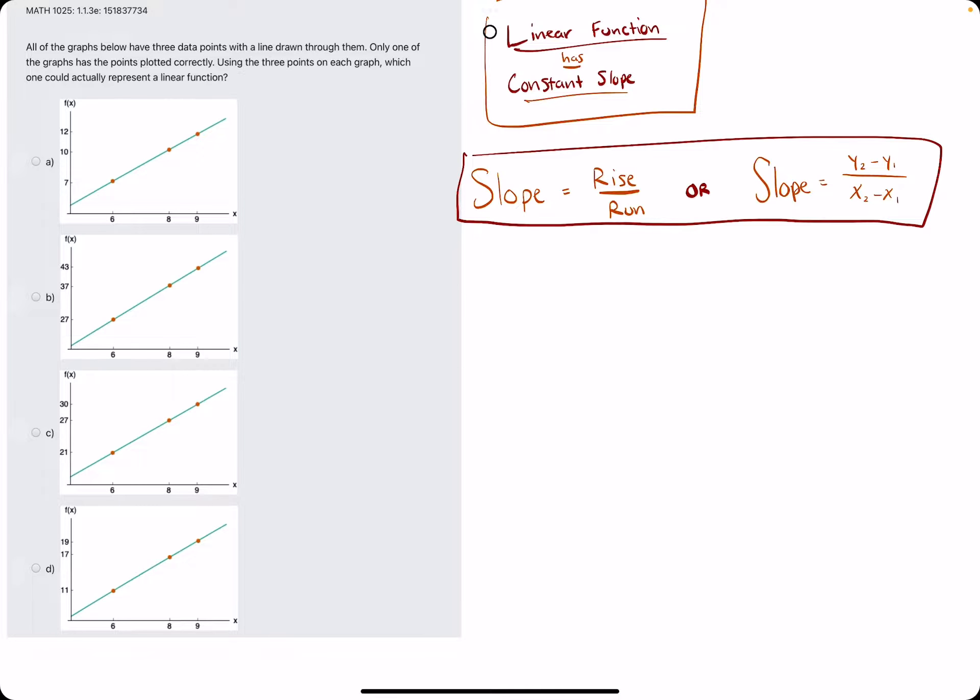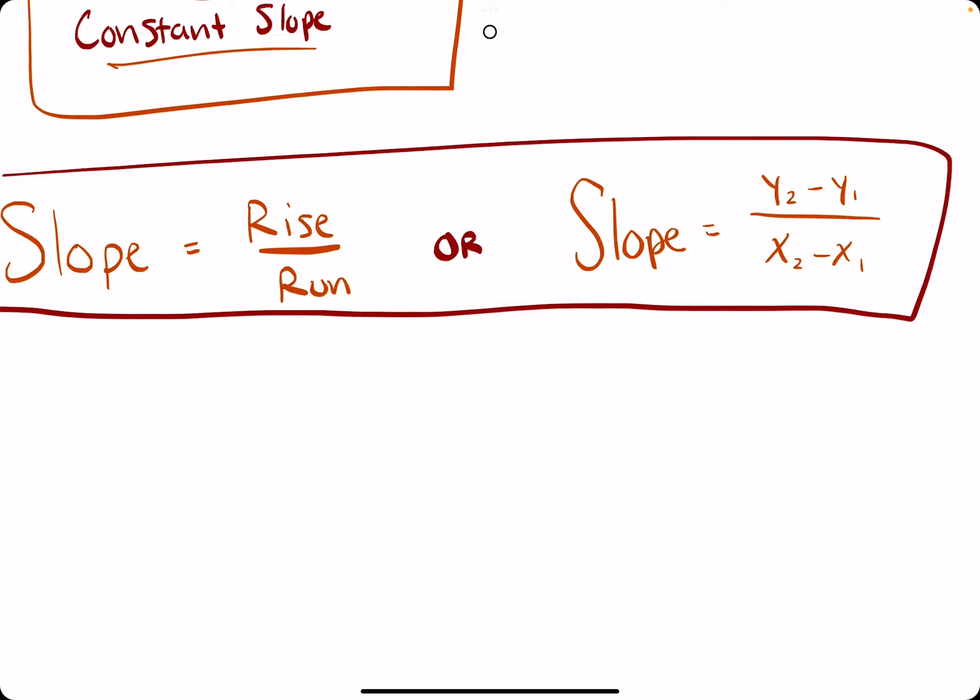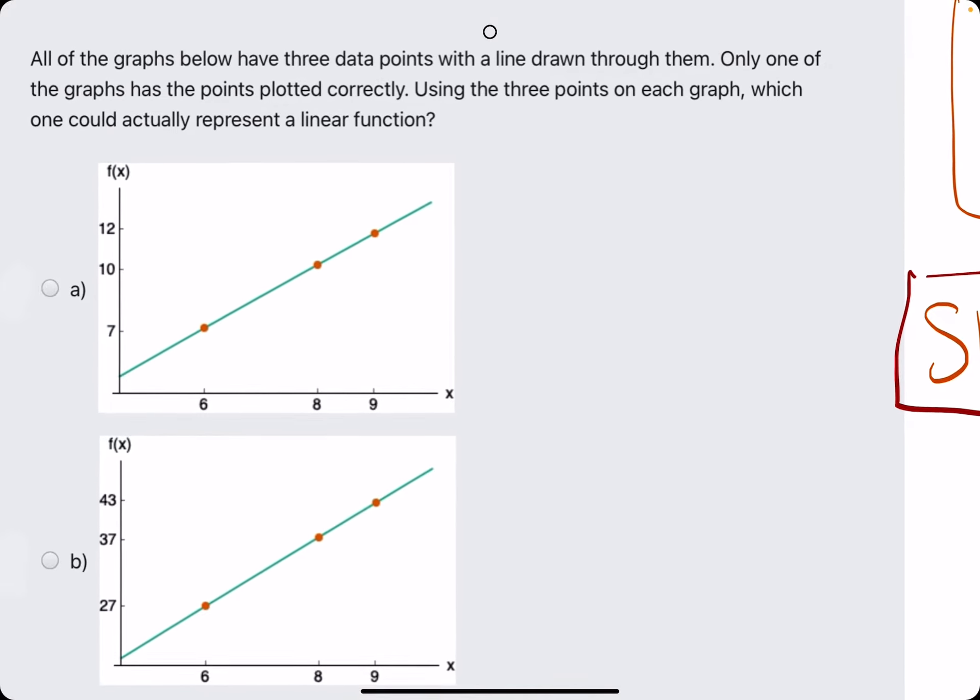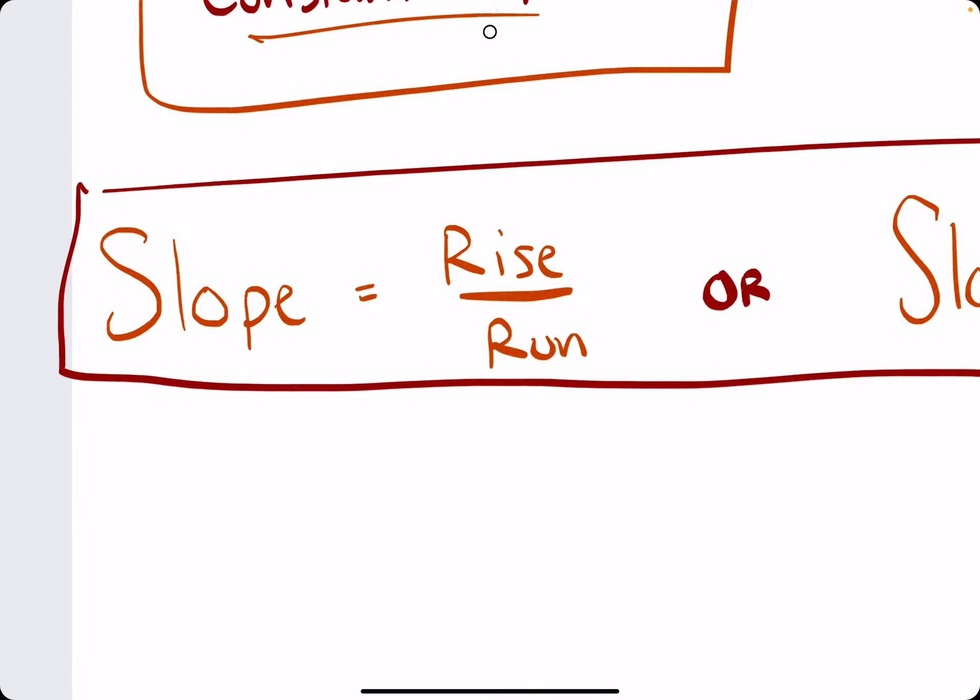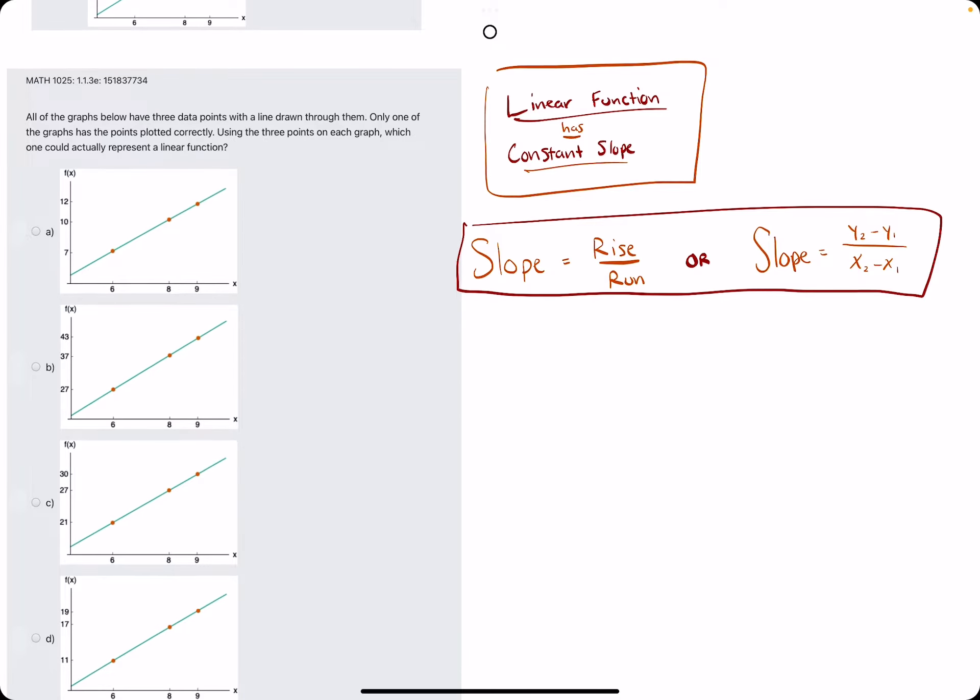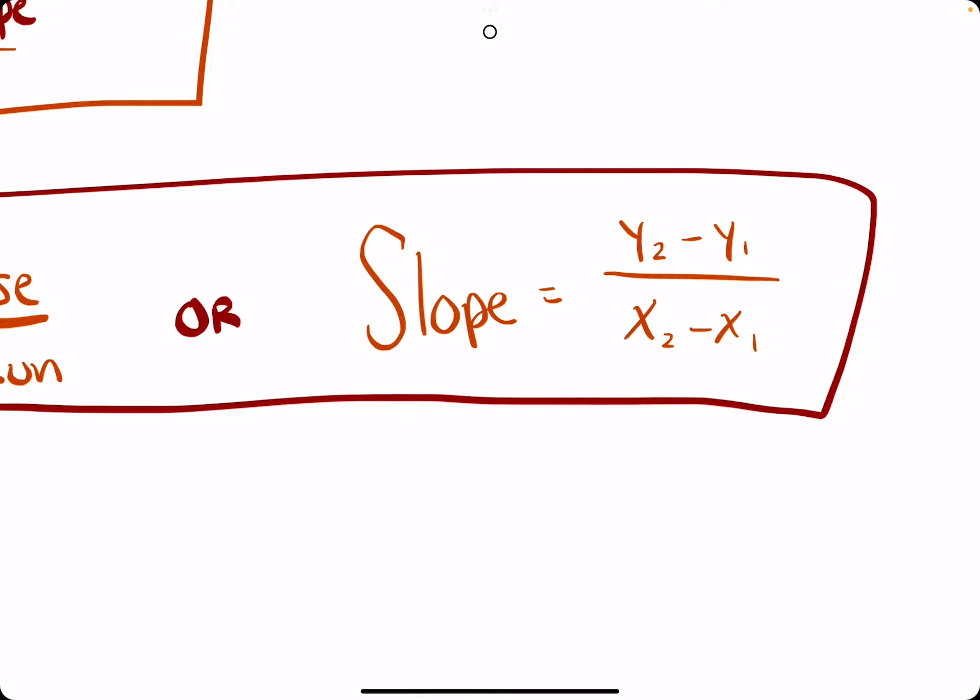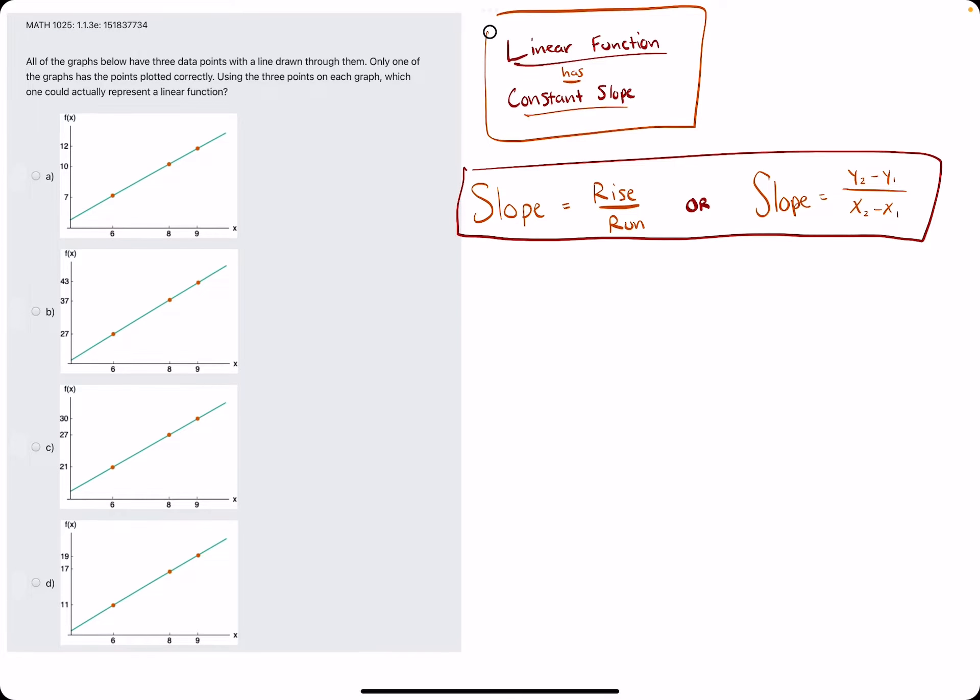So we're trying to find which one of these is actually linear by finding slope between the first two points and comparing it to the slope between the second and third points. What I like to use is just rise over run. It's a little bit easier. I think it's more efficient than using the slope formula.